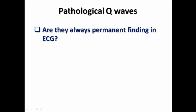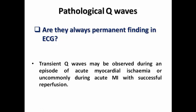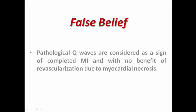Are pathological Q-waves always permanent findings on ECG? As a surprise, transient Q-waves may be observed sometimes during acute myocardial ischemia, or uncommonly during acute MI with successful reperfusion. So pathological Q-waves do not necessarily mean the patient has irreversible damage — they are sometimes transient and may improve after successful reperfusion.